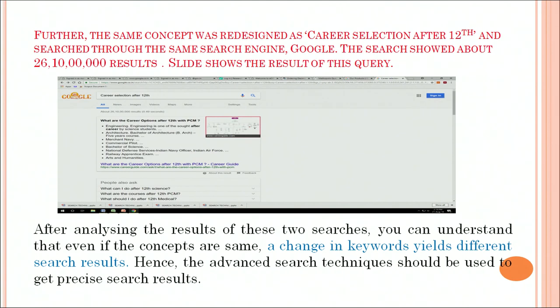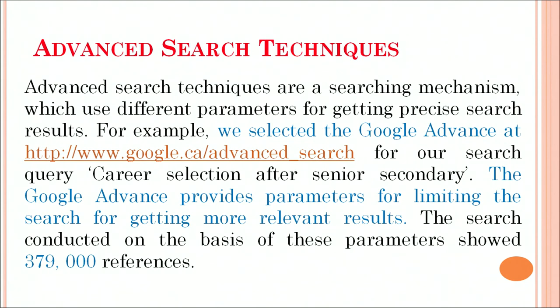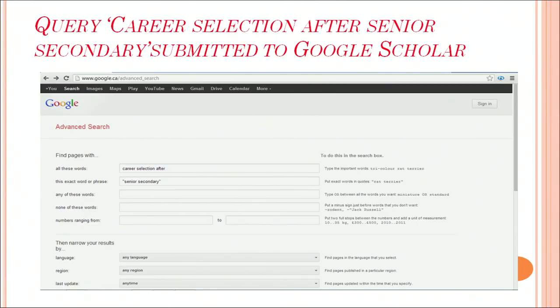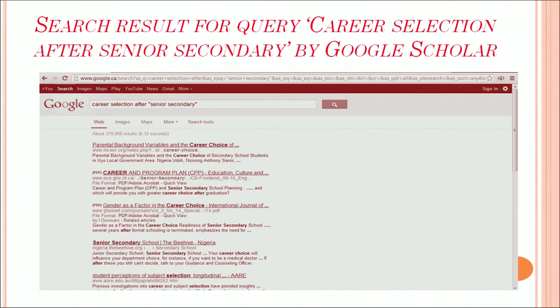Hence, the advanced search should be used to get precise results. Advanced search techniques are searching mechanisms which use different parameters to get precise search results. For example, we selected the Google Advanced Search link, and for our search query 'career selection after senior secondary' within quotes, the Google advanced search parameters were used for limiting the search to get more relevant results. The search conducted on the basis of these parameters got 379 million references. This is the screenshot showing the results output of this string.